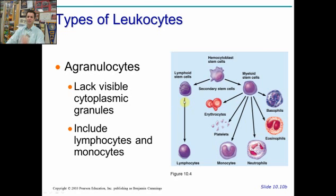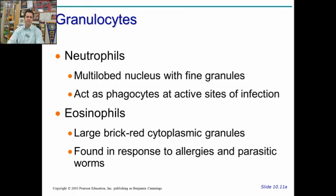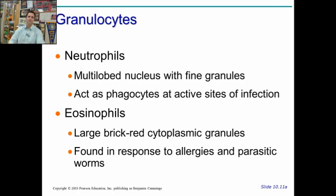The agranulocytes don't have cytoplasmic granules; this includes lymphocytes and monocytes. Neutrophils specifically have fine granules and act as phagocytes at sites of infection — basically they act like Pac-Man and consume and gobble up things. When they do, they may release these granules as forms of communication.